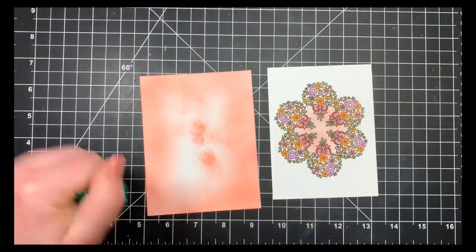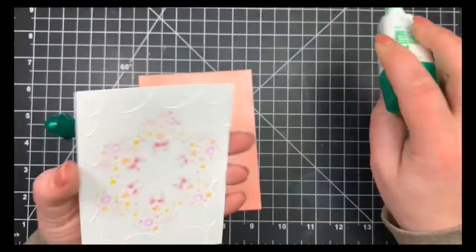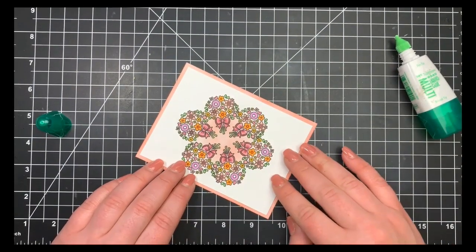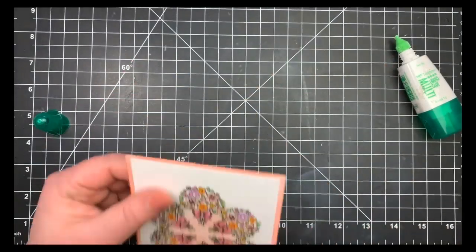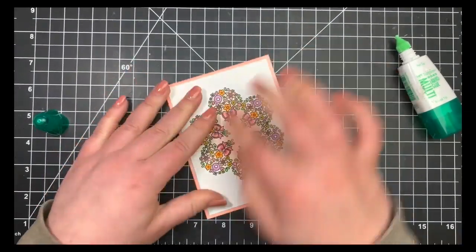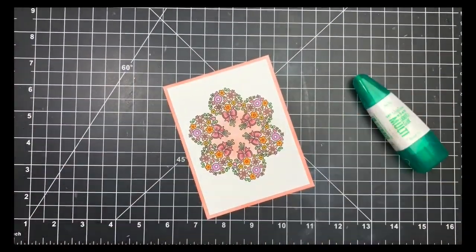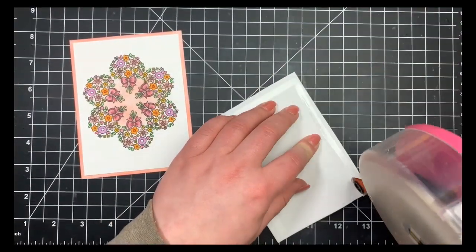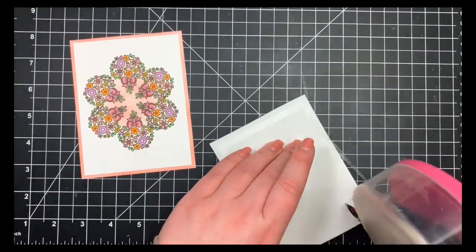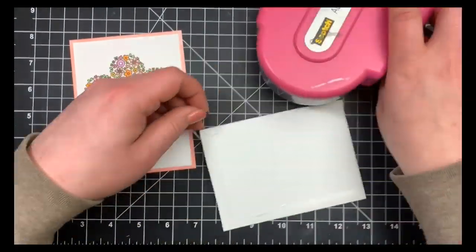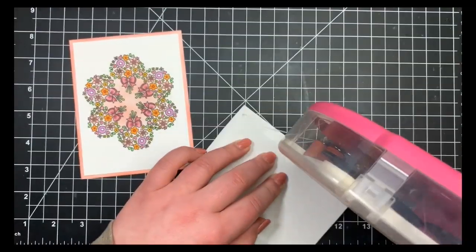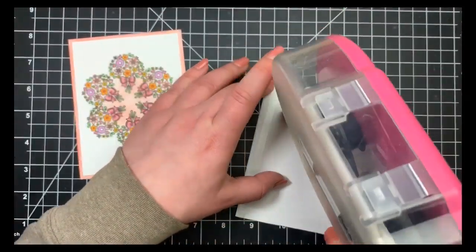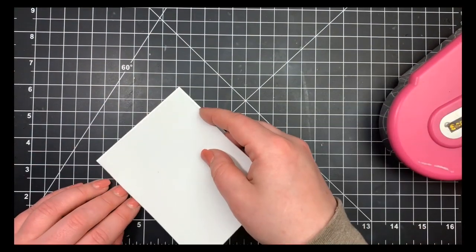I'm using my Tombow Mono Multi Glue to adhere my main panel directly onto that ink-blended panel to create a little bit of a border. Then I'm taking some fun foam to adhere that entire thing to an A2 size note card. I'm using my ATG gun; I find this works very good with foam, but it doesn't stick to it very good. You can see I kind of struggled a little bit—it sticks to my finger, gets all bunched up and all over the place. I don't know if you guys have problems with your ATG gun, but I certainly do.